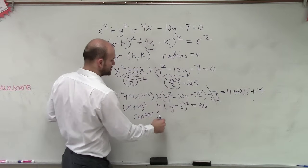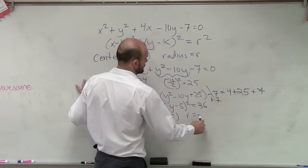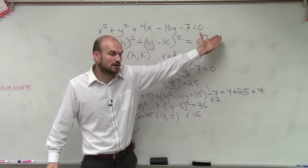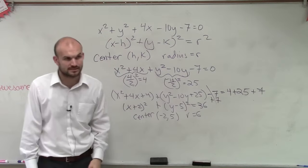So therefore, our center is going to be negative 2, 5. And then our radius is going to equal 6. Because remember, it says it equals r squared. Well, 36 is what squared, which is r, which is 6.